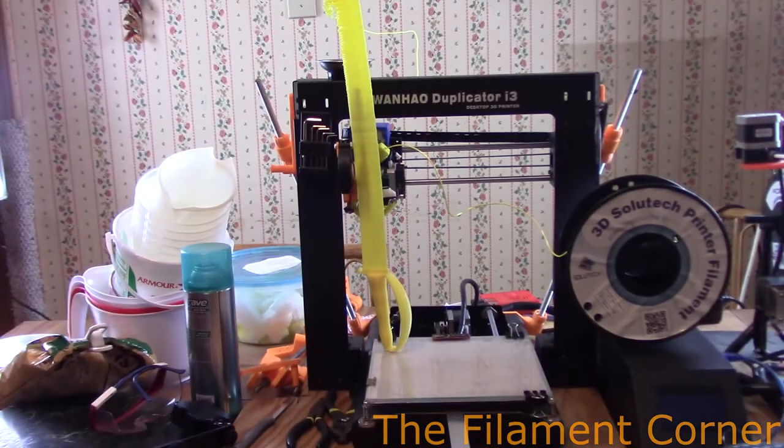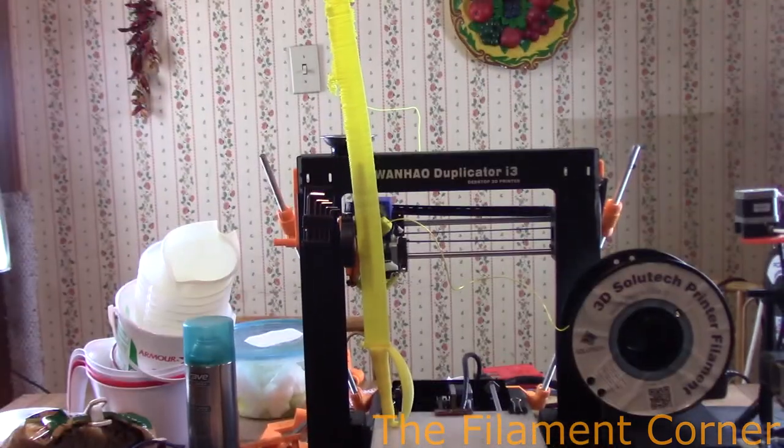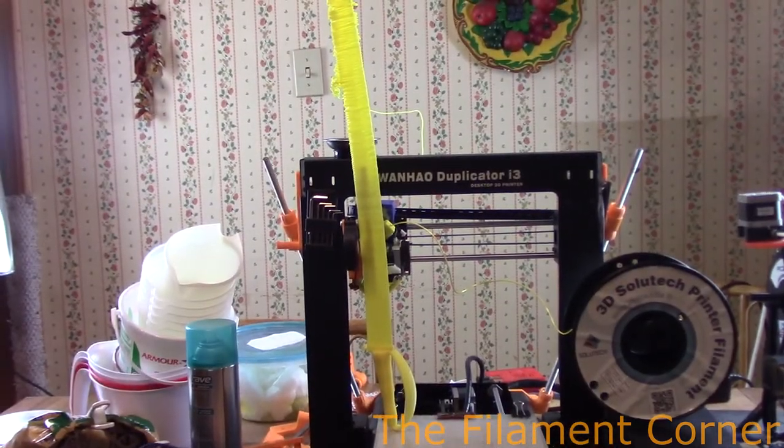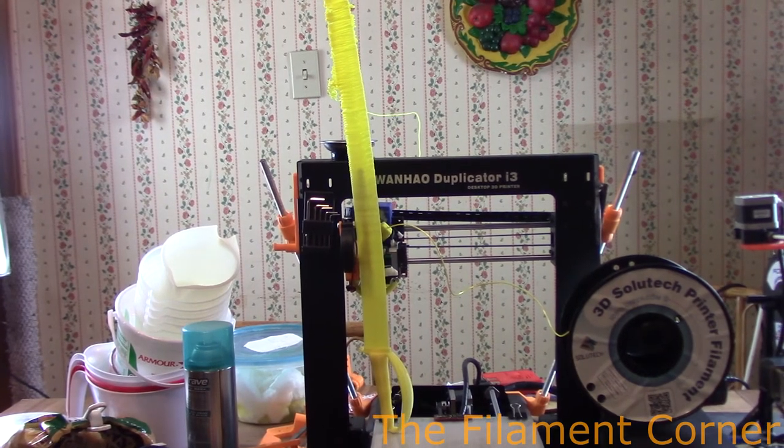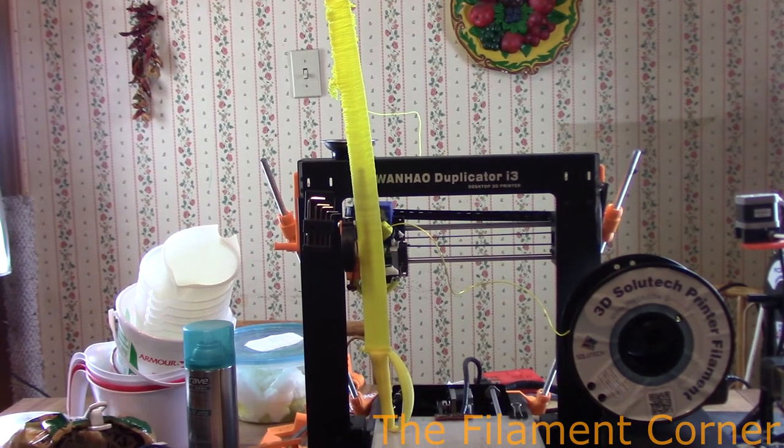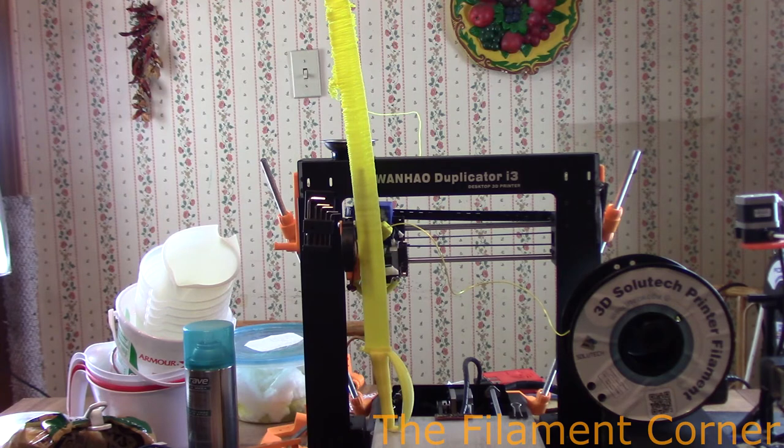And for this sword, I mean I want to try it again, but I may need to add in helper holders for the blade. Something that it prints and they attach to the blade, and then I have to snip them off afterwards, just so that way it has some sort of holding on to the blade as it goes up.